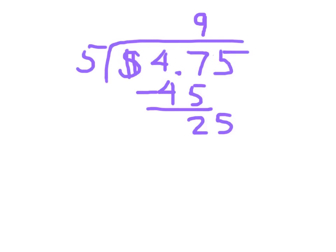47 minus 45 is 2, and I bring down the 5. 25 divided by 5 is 5, because 5 times 5 is 25. And 25 minus 25 is 0.